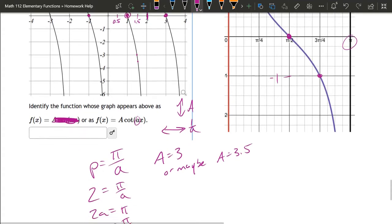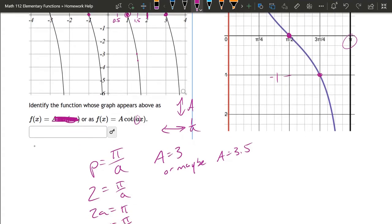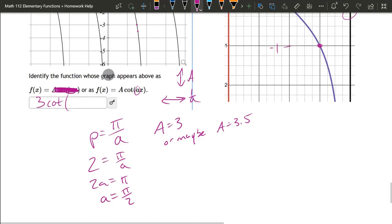So if it's three, my answer will be big A is three, the cotangent of little a, pi over two, times X. So that'll be my answer.